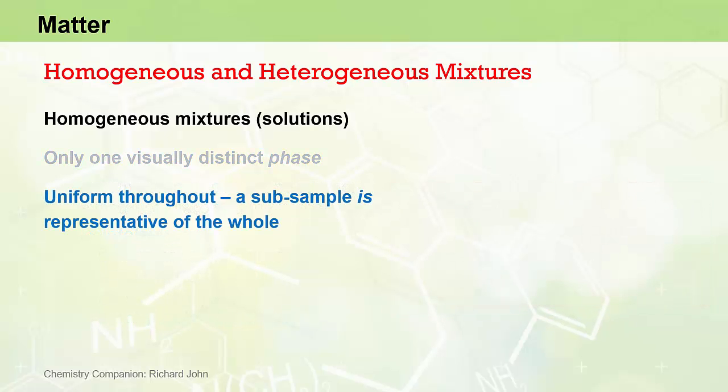For homogeneous mixtures or solutions, the matter is uniform throughout and a small subsample will be representative of the whole. However, even though any single sample will be uniform throughout, the composition may vary from sample to sample depending on the relative ratio of substances mixed. If the composition varies, so too can the physical and chemical properties.